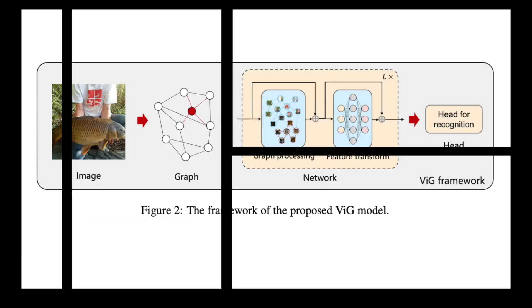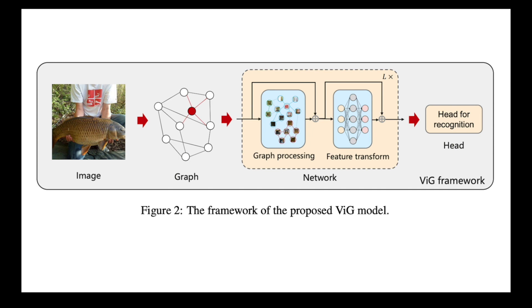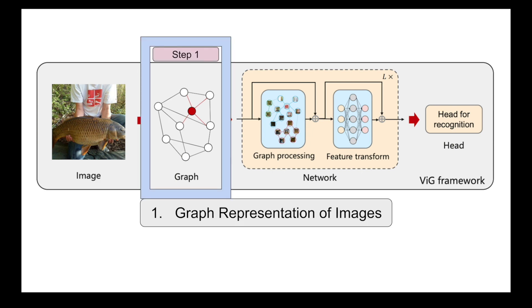Here we can see the framework for the proposed VIG model, where an image will be split into N patches and those patches are going to constitute the graph representation of the image. So the very first step for us to know is how the graph representation of the image is created in this VIG transformer.